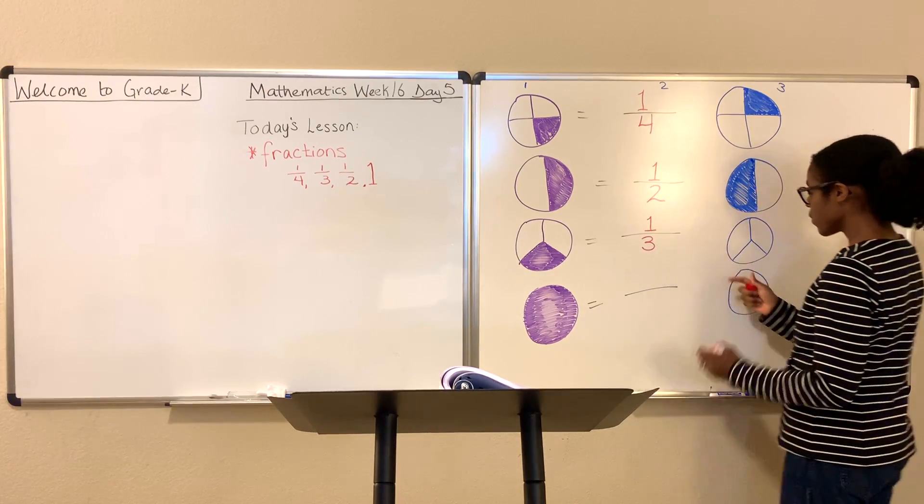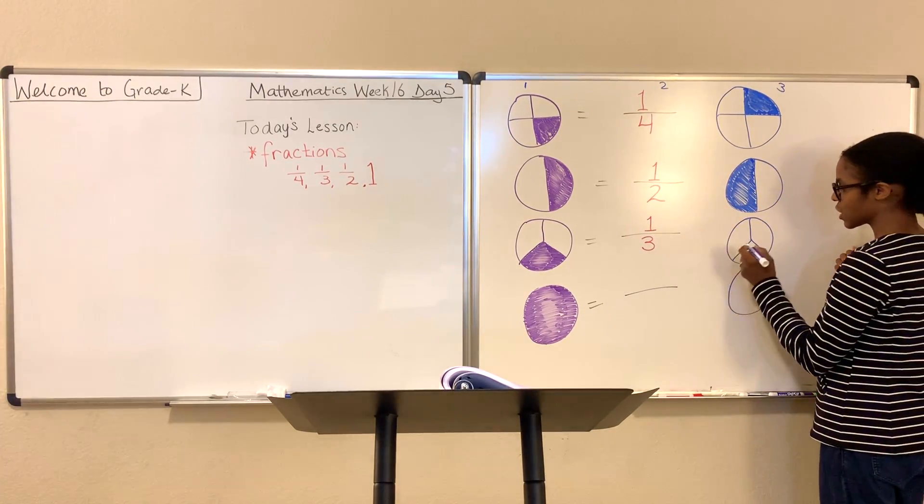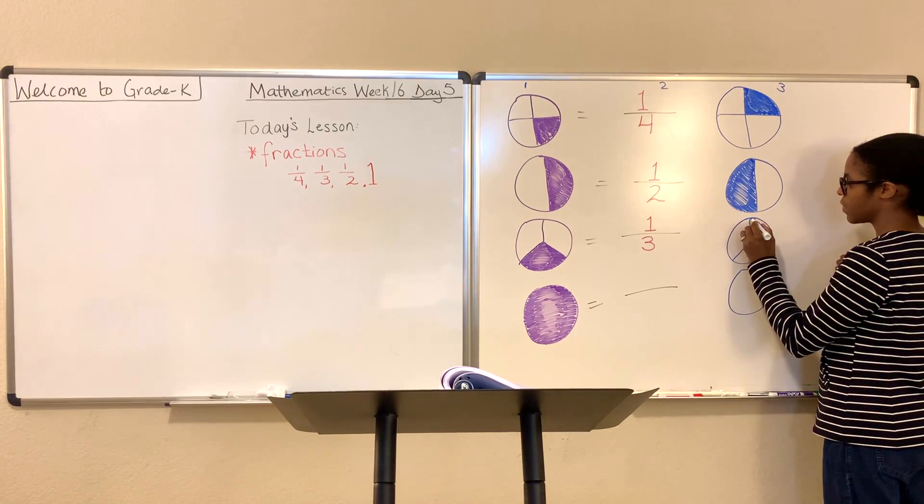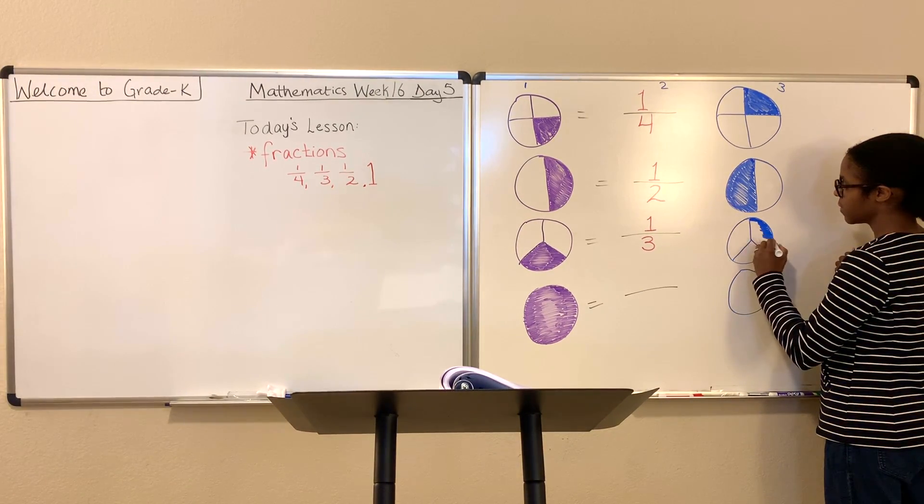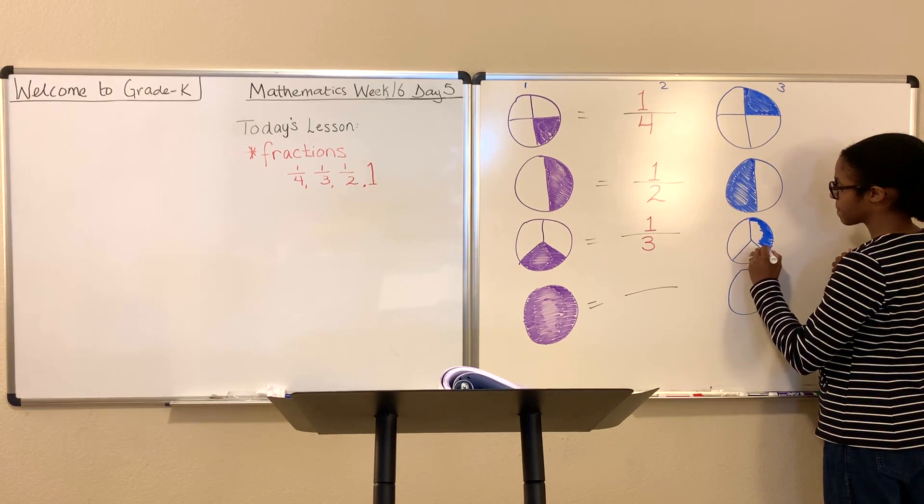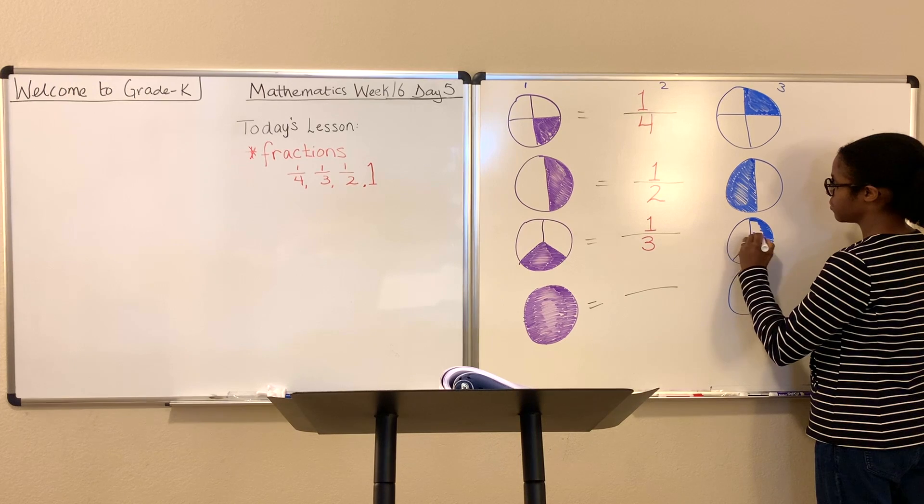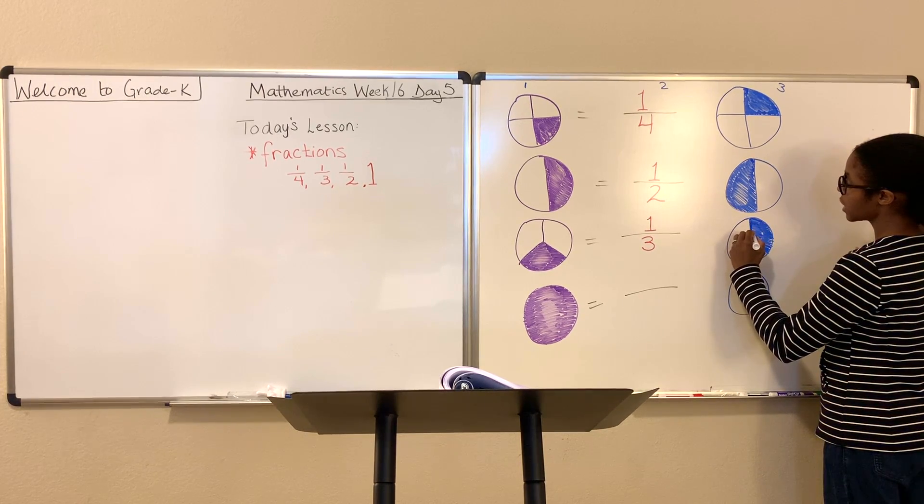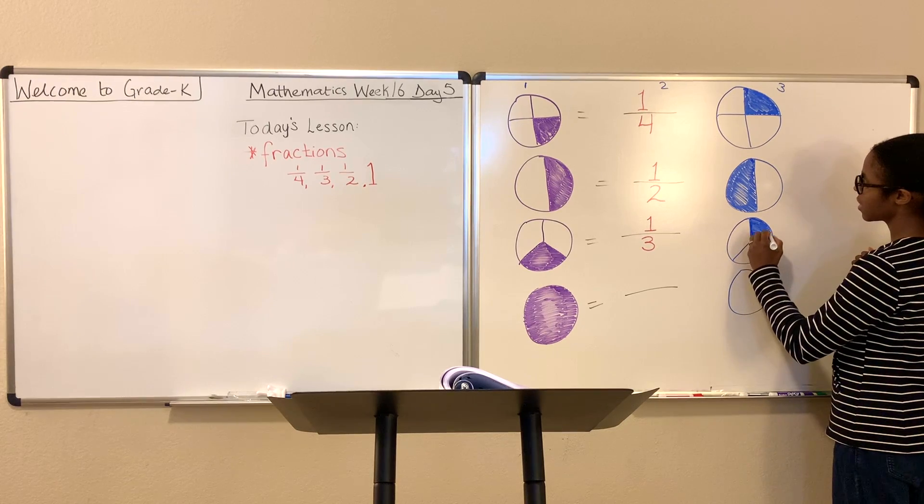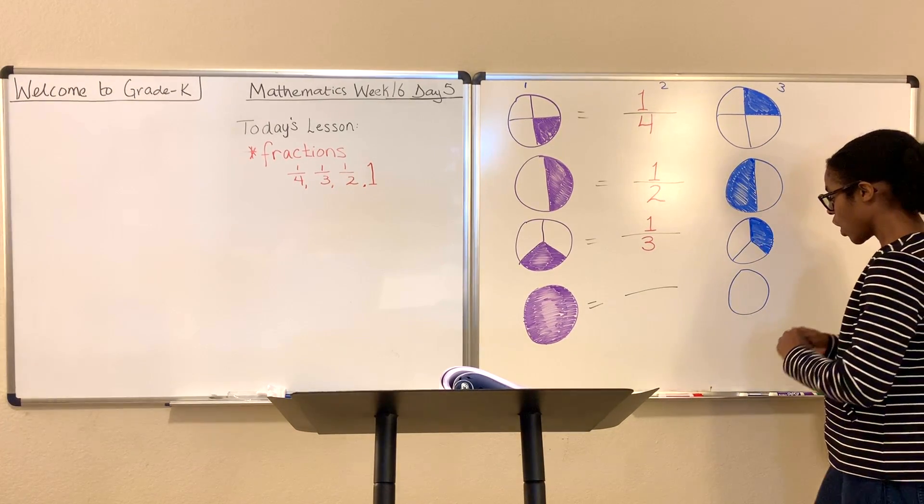What we're going to do is come over here and make this circle reflect that circle. You can choose any one of the sections to color in. And I'm just going to choose this one just to show you that it doesn't matter which section you choose to color in as long as you only shade in one.